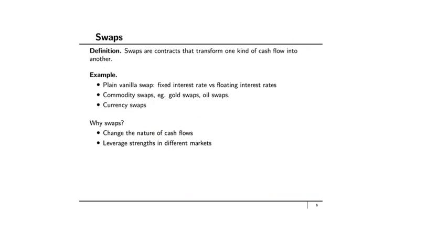Next we look at swaps: what they are, why they're important, and how to price them. Swaps are contracts that transform one kind of cash flow into another. The most plain-vanilla swap exchanges fixed interest rates for floating interest rates — one party receives a fixed rate on a notional principal and pays a floating rate, and the other party does the reverse. Commodity swaps include gold swaps and oil swaps, where one person receives the floating price and the other receives a fixed price over a certain period.